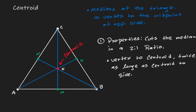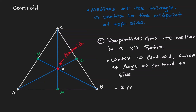If we consider the median CM and measure the distance CX, that is going to be twice as large as the distance from X to M. So we can say that two times XM is equivalent to one CX.